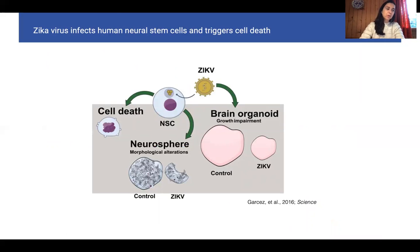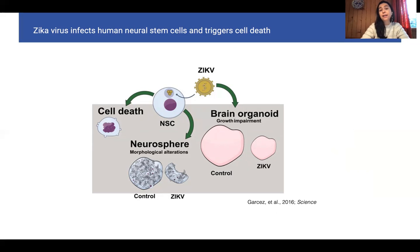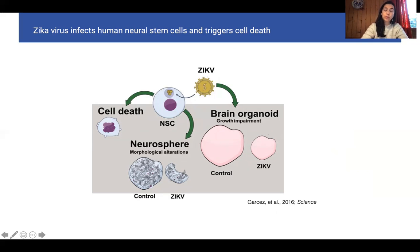In 2016, very closely following what happened in 2015, we knew there was an explosion of microcephaly and wanted to test if Zika virus could actually impact brain development. For that, we used human neuro stem cells, and we saw that the virus was able to infect those cells and cause cell death. Also in 3D models like neurospheres or brain organoids, we could see that Zika virus could impact the growth of these 3D structures. So we could link Zika virus with microcephaly.